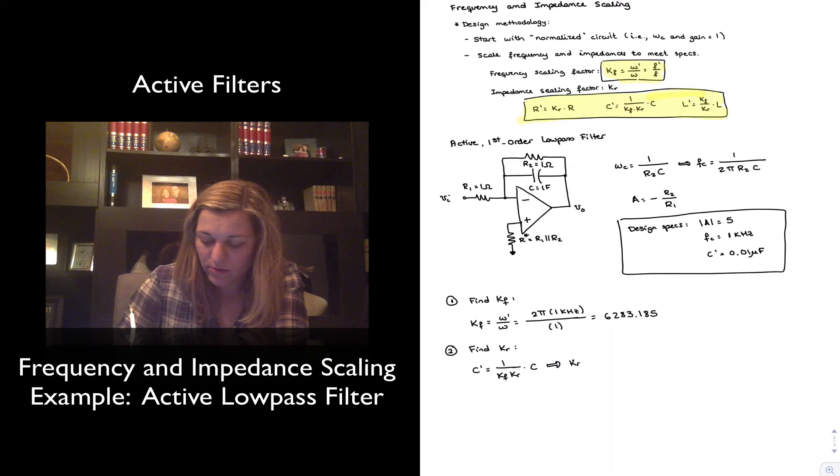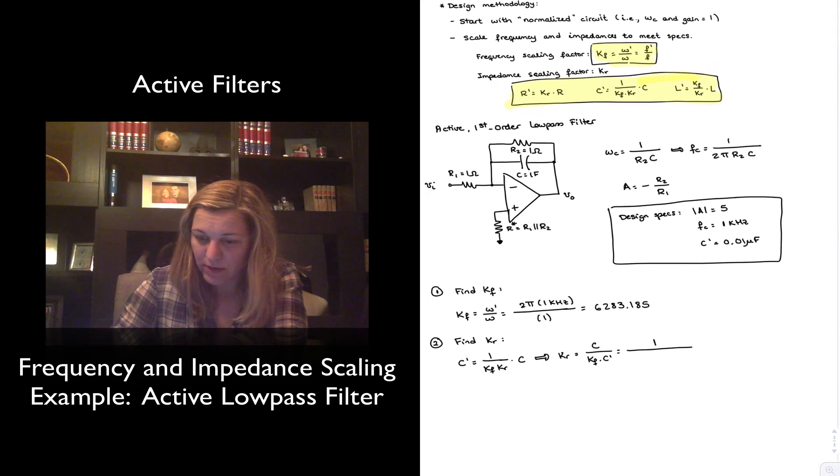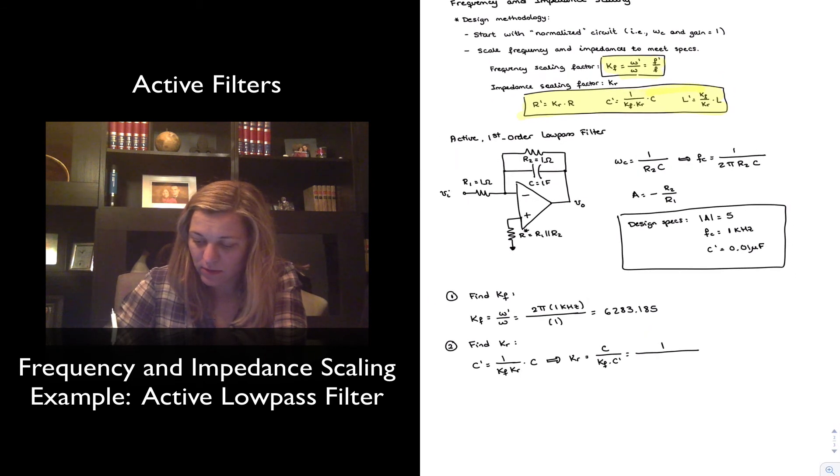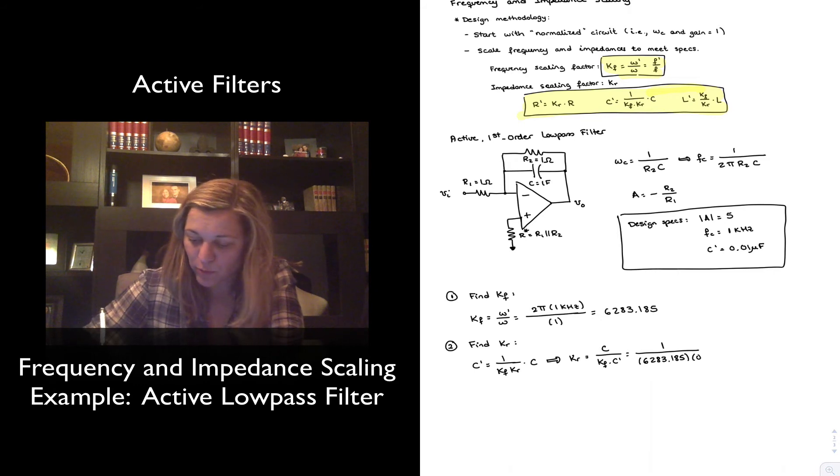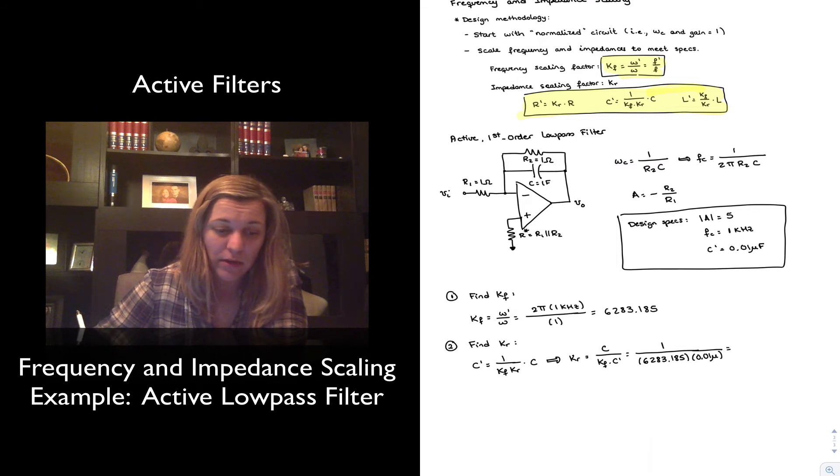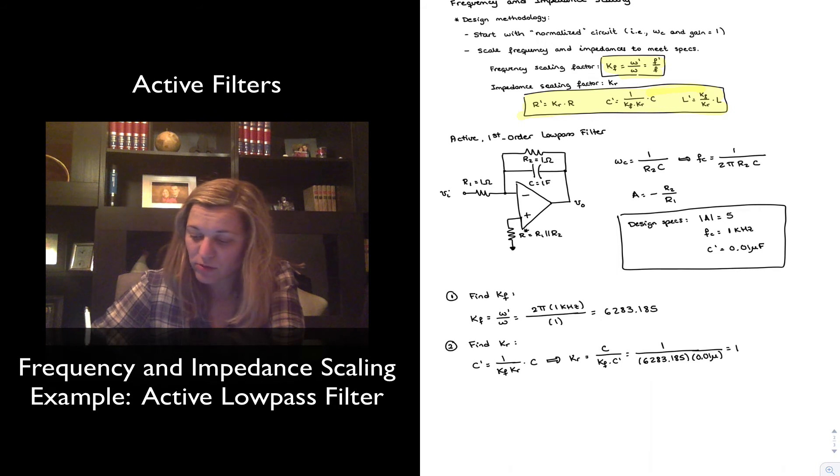My KR is going to be C divided by KF times C', or 1 farad divided by KF, I just calculated it to be 6,283.185, and my capacitor, excuse me, my C prime I want it to be 0.01 microfarads. So that gives me an impedance scaling factor equal to 15,915.5.